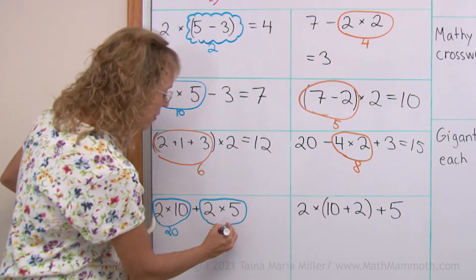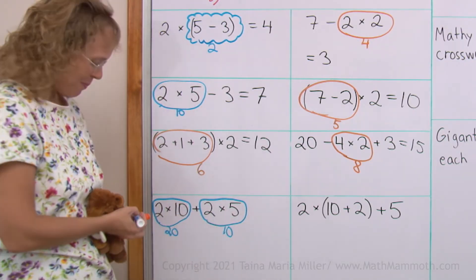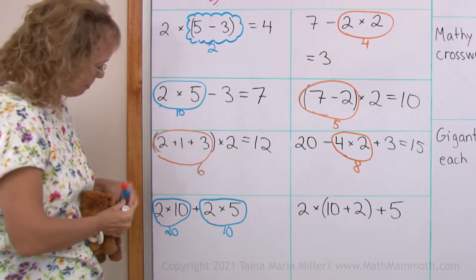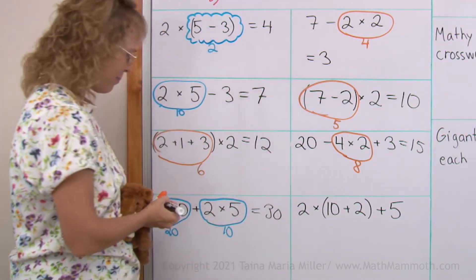2 times 5 is 10. And then you add, so we get 30.